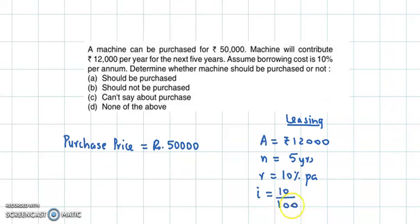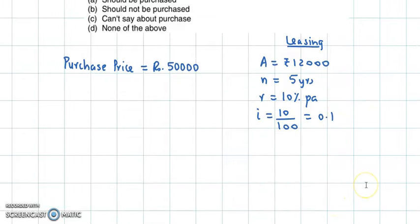Now we know the formula for present value is A upon i into 1 minus 1 plus i raise to minus n.